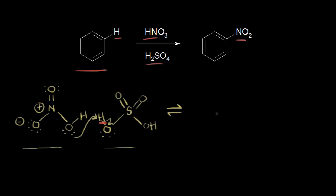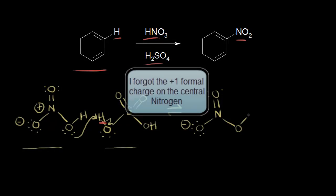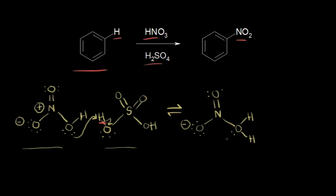Let's show that acid-base reaction. This oxygen still has a negative-one formal charge on it. Over here on the right, this oxygen already had one hydrogen bonded to it and just picked up another proton, so it still has one lone pair of electrons, which gives it a plus-one formal charge. This lone pair of electrons picked up a proton, giving that oxygen a plus-one formal charge.